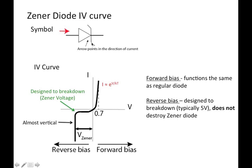And so here's the IV curve. Same forward bias, same voltage temperature dependence as the regular diode. The difference comes in the reverse bias mode.